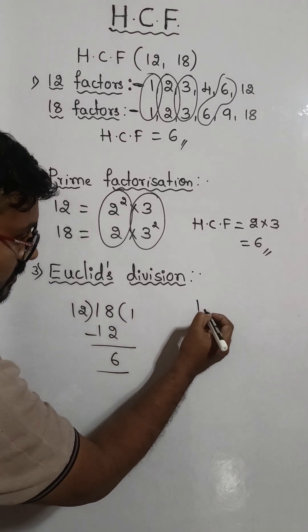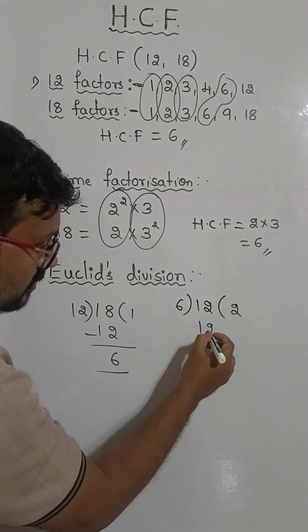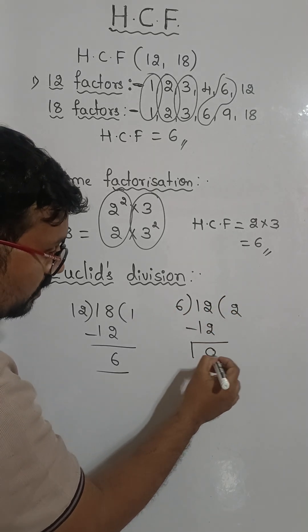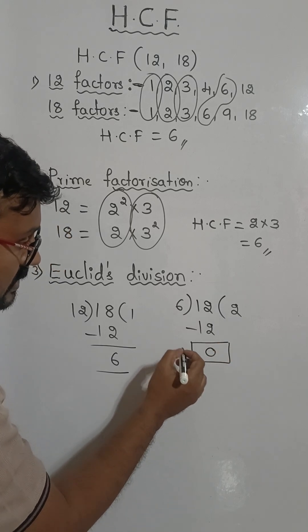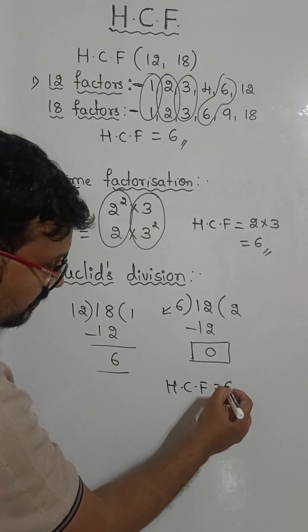And divide 12 by the remainder, which is 6. 6 goes into 12 two times. So the remainder is equal to 0. When the remainder is 0 at this stage, the divisor is the HCF. Therefore HCF is equal to 6.